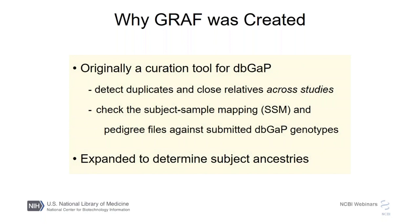Part of that process — and I put these terms here mostly because they may come up in later slides — the subject sample mapping files and the pedigree files are pretty commonly known files in this sort of work, and those get used in that first step in looking at relatedness. The second function, often called graph POP for population, was added fairly recently, and that's the function that helps to estimate subject ancestries. It also deals with the issue among GWAS studies that much of this data was collected on different genotyping platforms, so it normalizes that problem as well.